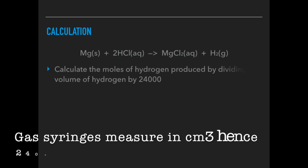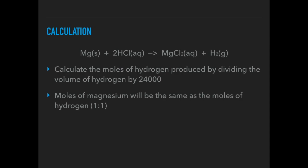Here's the steps required in the calculation. The first thing you do is calculate the moles of hydrogen produced by dividing the volume of hydrogen by 24,000. The moles of magnesium would be the same as the moles of hydrogen because of the 1 to 1 ratio between these two substances in the equation. Then the Mr of magnesium would be calculated by dividing the mass, remember you measured the mass of magnesium at the start, by the moles. That would give you the Mr.